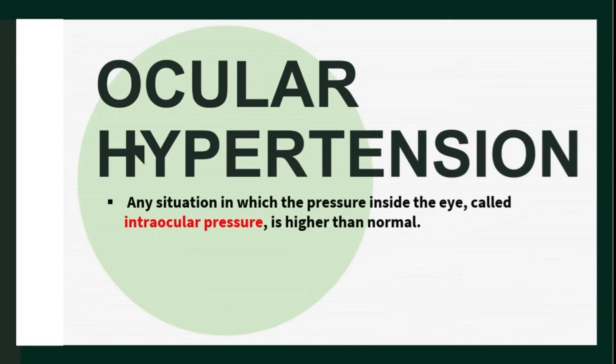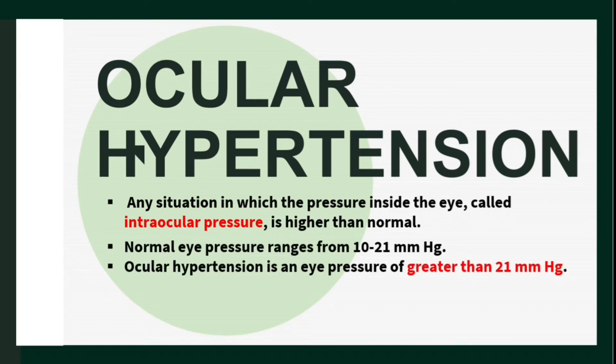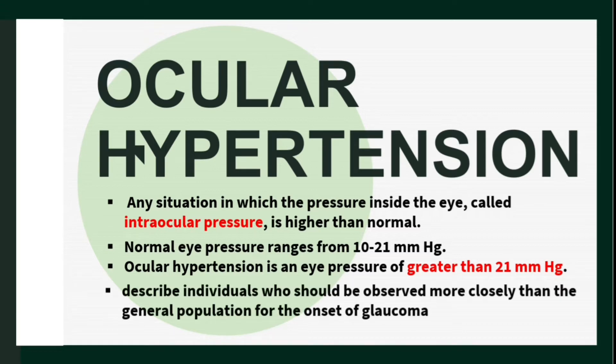Ocular hypertension is any situation in which the pressure inside the eye — the intraocular pressure — is higher than normal. Normal intraocular pressure is about 10 to 21 millimeters of mercury, so ocular hypertension is an eye pressure greater than 21 millimeters of mercury. Ocular hypertension is not actually a disease, but is a term used to describe individuals who should